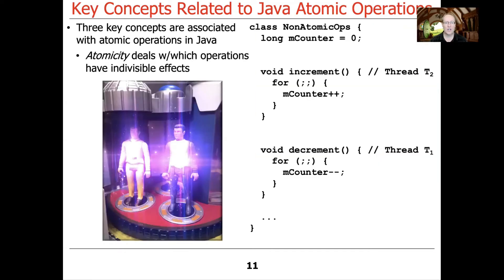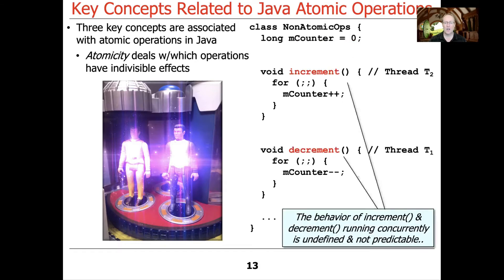Atomicity deals with which operations have indivisible effects. We'll take a look at a simple example. This is a recap from what we've talked about before. Imagine that we've got a class, which I've aptly named non-atomic ops. And I've made just a good old long field called mCounter, which is going to keep track of count. That's what we refer to in the nomenclature of concurrency as mutable shared state. The reason why it's mutable shared state is it's going to be changeable by multiple threads and readable by multiple threads. So here you can see we've got two methods, increment and decrement. Increment runs in thread T2. Decrement runs in thread T1. And if we were to run this program, you would get inconsistent results.